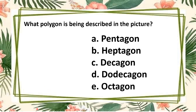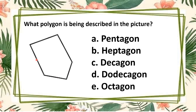Number two — let us count: one, two, three, four, five. What polygon has five sides? What do you call that polygon? The answer is pentagon.